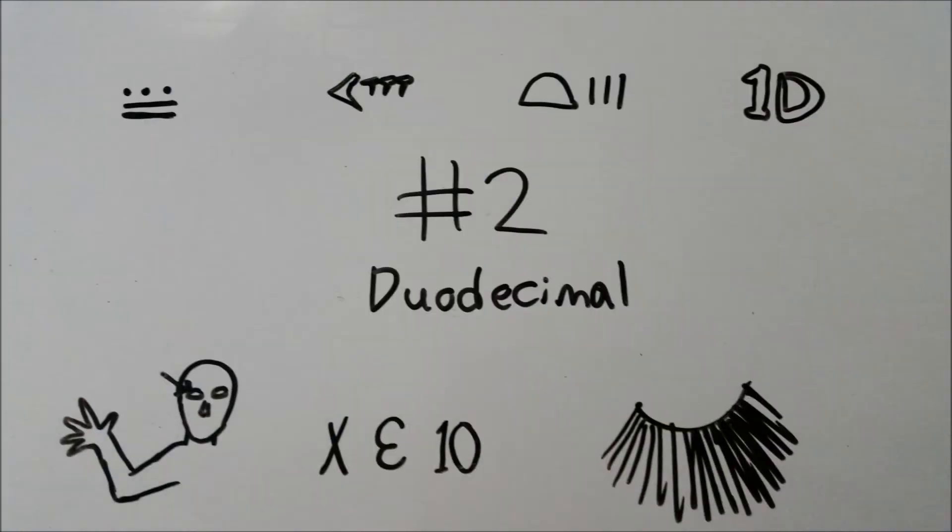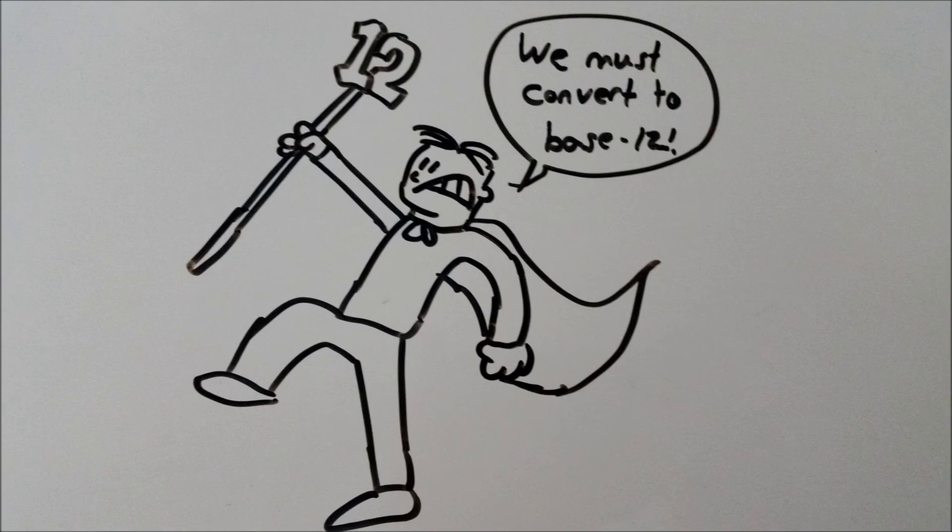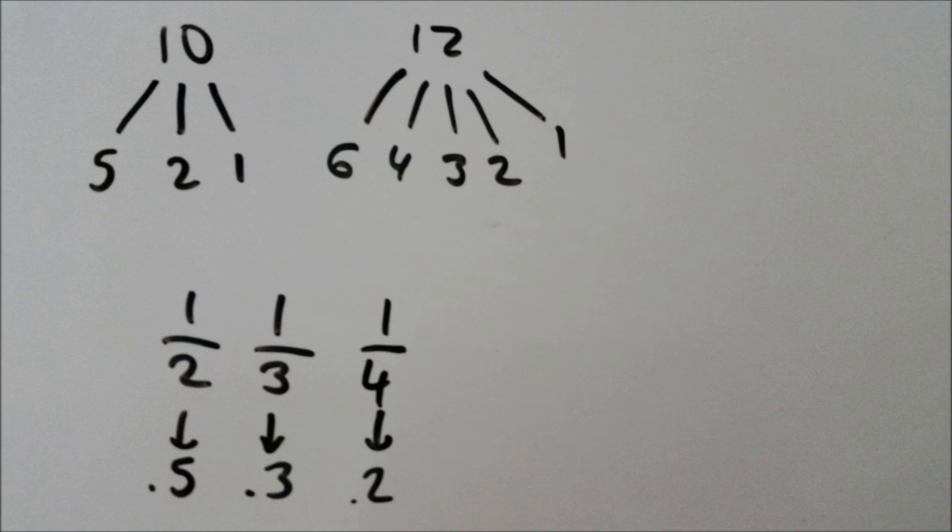Number 2, Duodecimal. Believe it or not, even though the base 10 number system the West uses all the time to do any kind of math from arithmetic to theoretical physics is the standard, there are some who say it's just not good enough. The Dozenal Society of America and the UK think that base 10 is not nearly as effective as base 12.